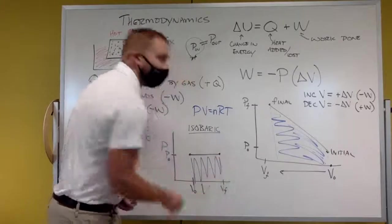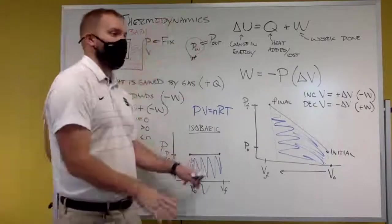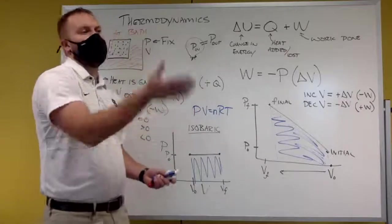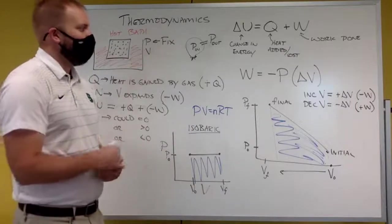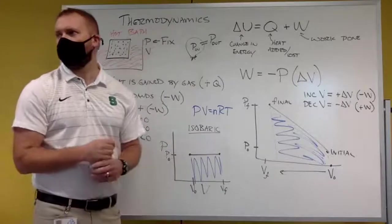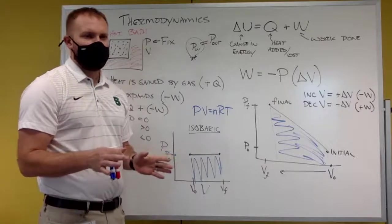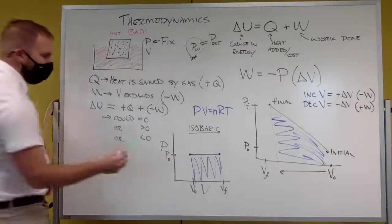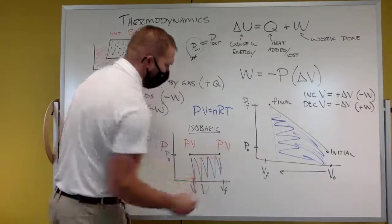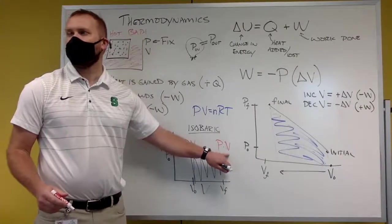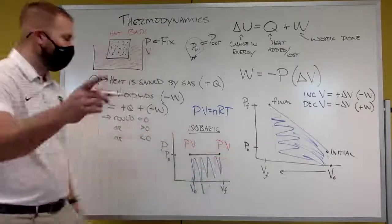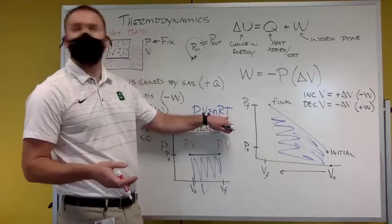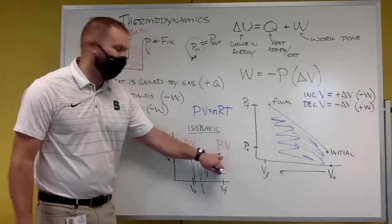How can there be no work? Because the volume stays constant. In the isochoric case with the vertical line, there's no work done on or by the gas. Looking at this isobaric case, pressure times volume is greater at the final point — the right side — so temperature goes up, confirming the internal energy increases.